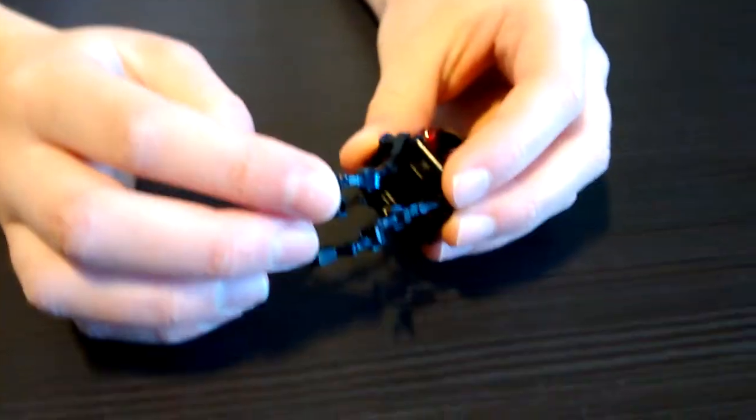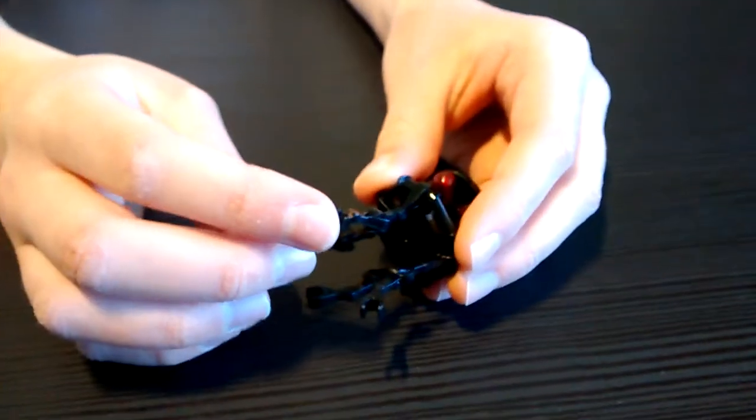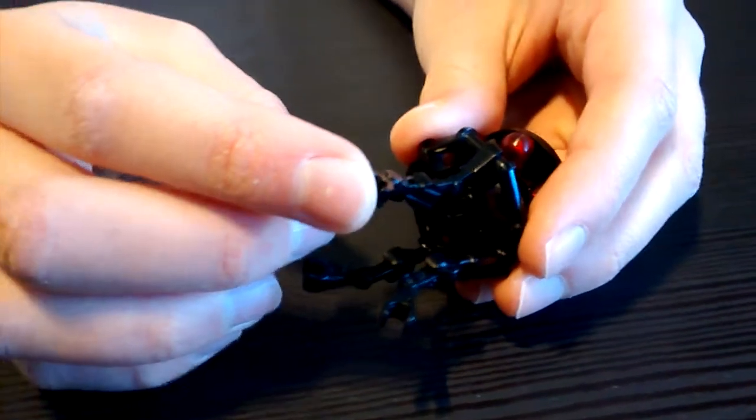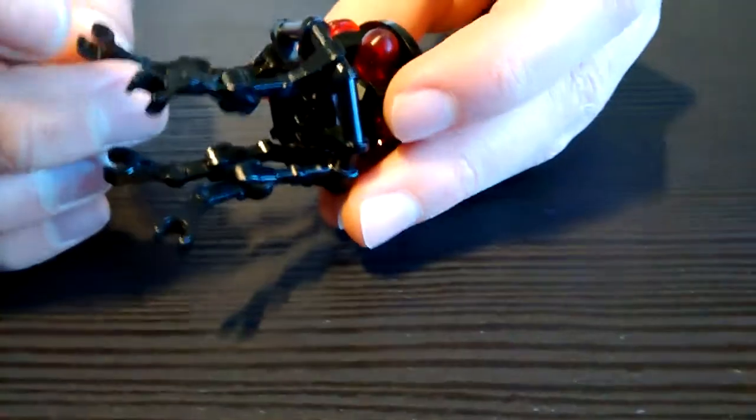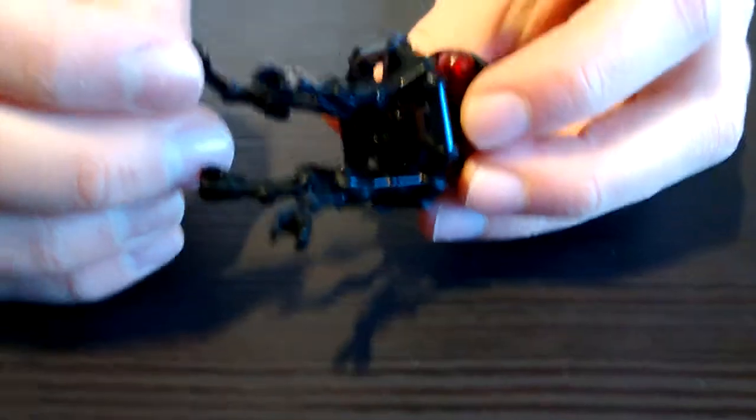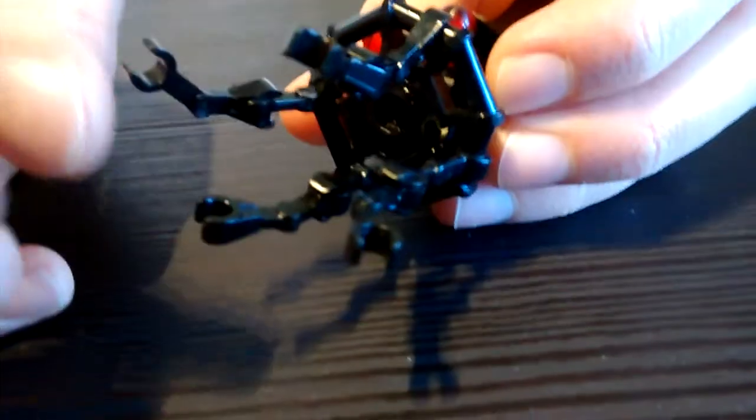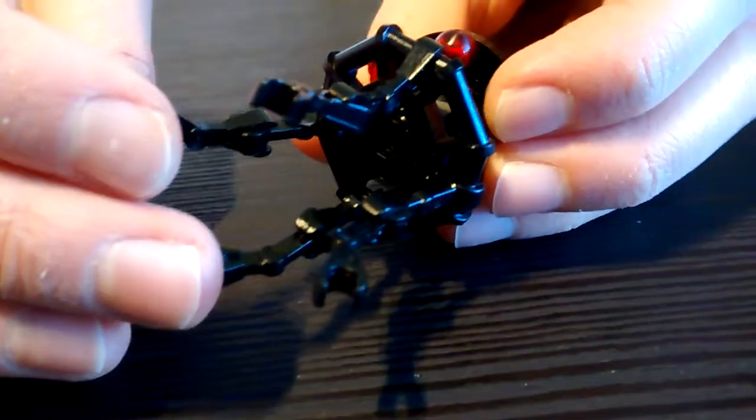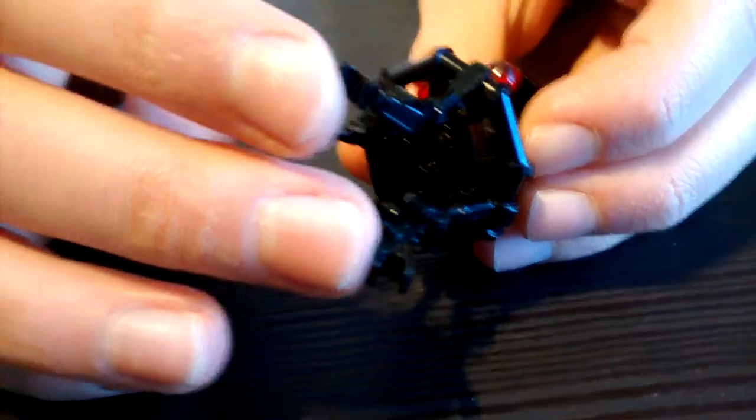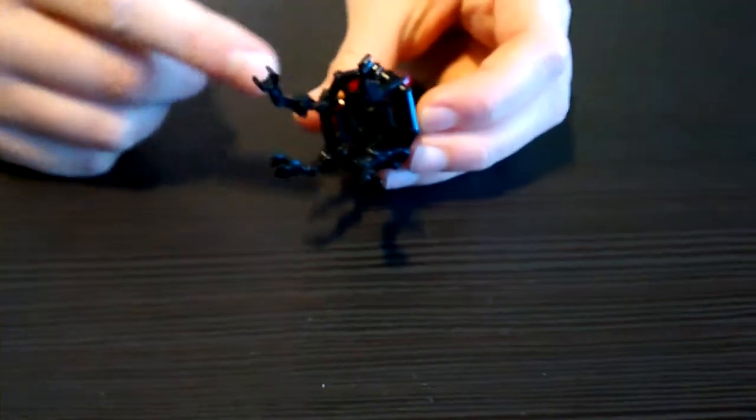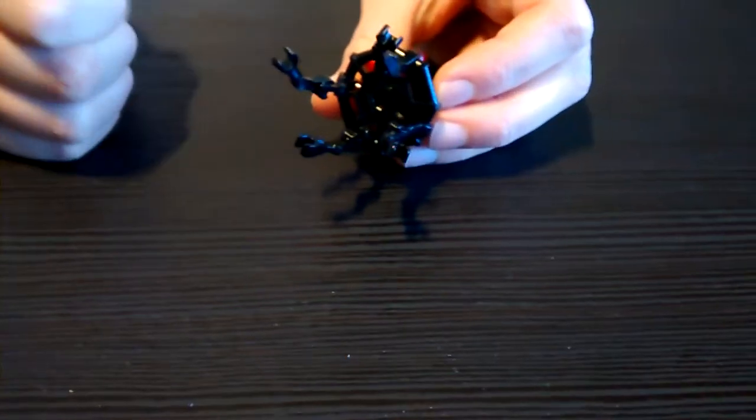And I used two black droid arm pieces for each of the arms. I think there's supposed to be five arms, but this is not a pentagon. This is an octagon. And you can't put five things on an octagon and have it be symmetrical with long arms.